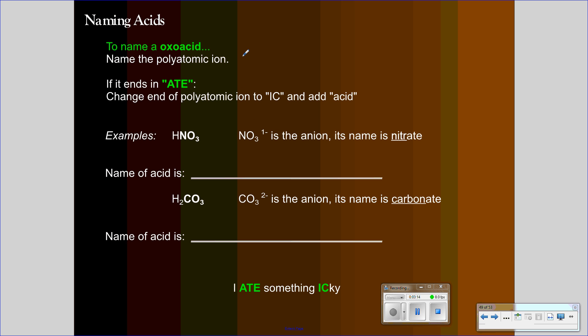To name an oxoacid, it gets a bit more complicated. First, you should note that your acid contains oxygen, and it's ternary. It's got three elements there. And you should additionally notice that hydrogen is bound to a polyatomic ion that we're familiar with. In this case, we have nitrate. If it ends in A-T-E, we're going to change that A-T-E ending to ick. Notice I haven't said anything about hydro. That's because we do not use hydro for oxoacids. So, I'm just going to take nitrate, and I'm going to change ate to ick, and it becomes nitric acid.